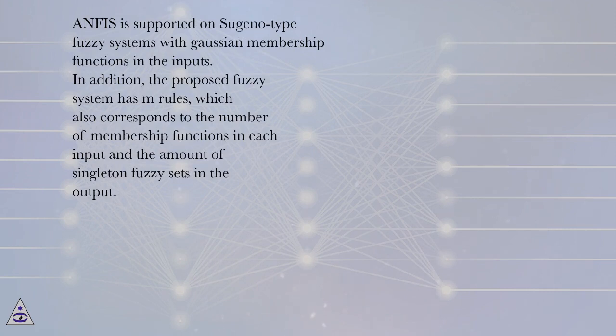ANFIS is supported on Sugeno-type fuzzy systems with Gaussian membership functions in the inputs. In addition, the proposed fuzzy system has M rules, which also corresponds to the number of membership functions in each input and the amount of singleton fuzzy sets in the output.